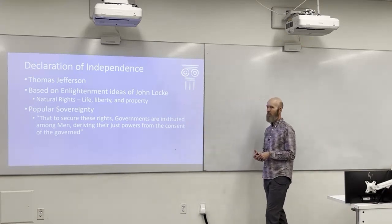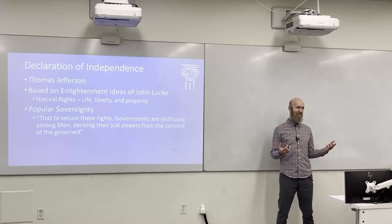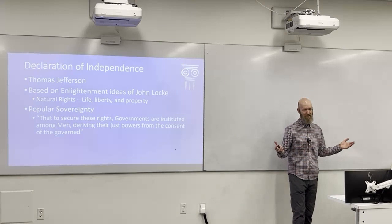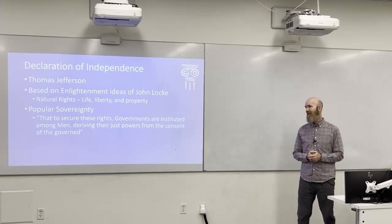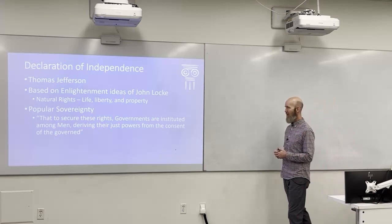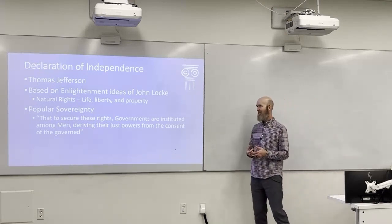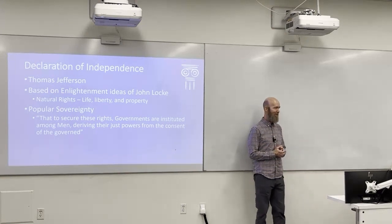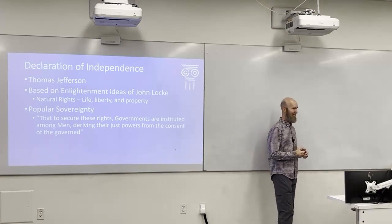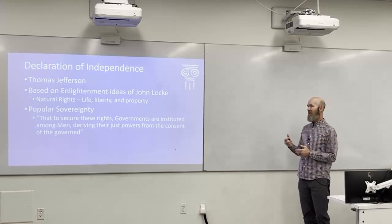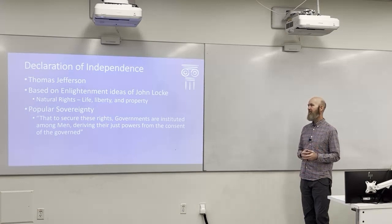John Locke wrote about our natural rights — rights that you are born with just by nature of being human. John Locke said we have the right to life, liberty, and property. Thomas Jefferson essentially borrowed that, but changed it slightly. Instead of life, liberty, and property, Jefferson said life, liberty, and the pursuit of happiness. So a lot of the words of the Declaration of Independence come straight from John Locke.